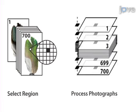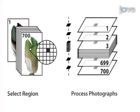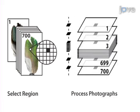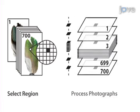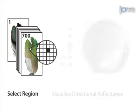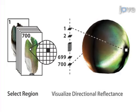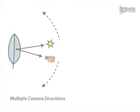In the software, select a region of interest on the material and extract the pixels comprising the region in each photograph, then map the pixel values to their respective positions on the sphere to visualize the direction of the light scattered from the selected region.